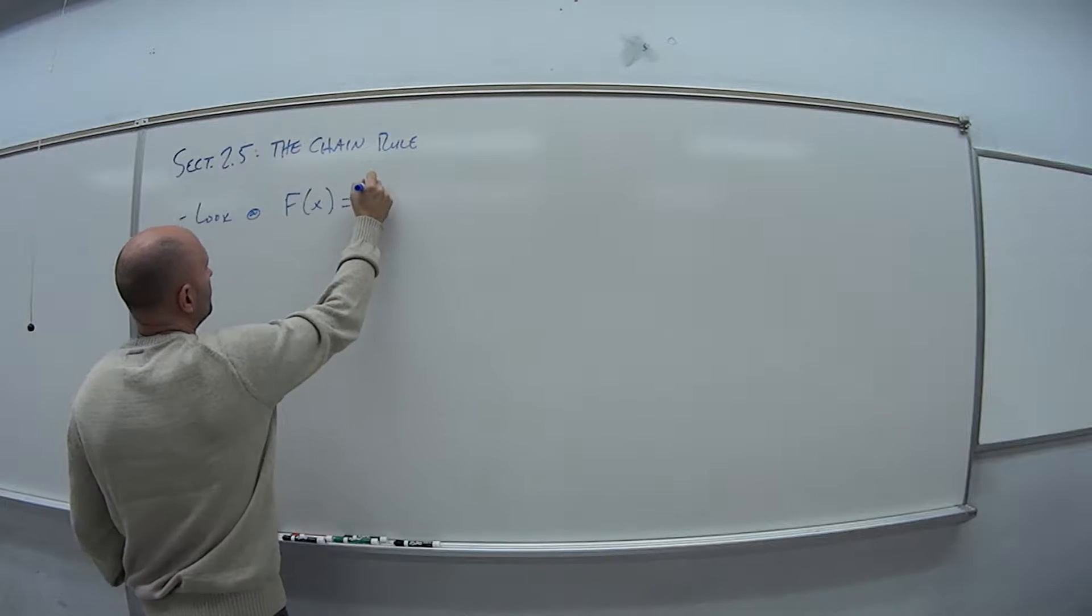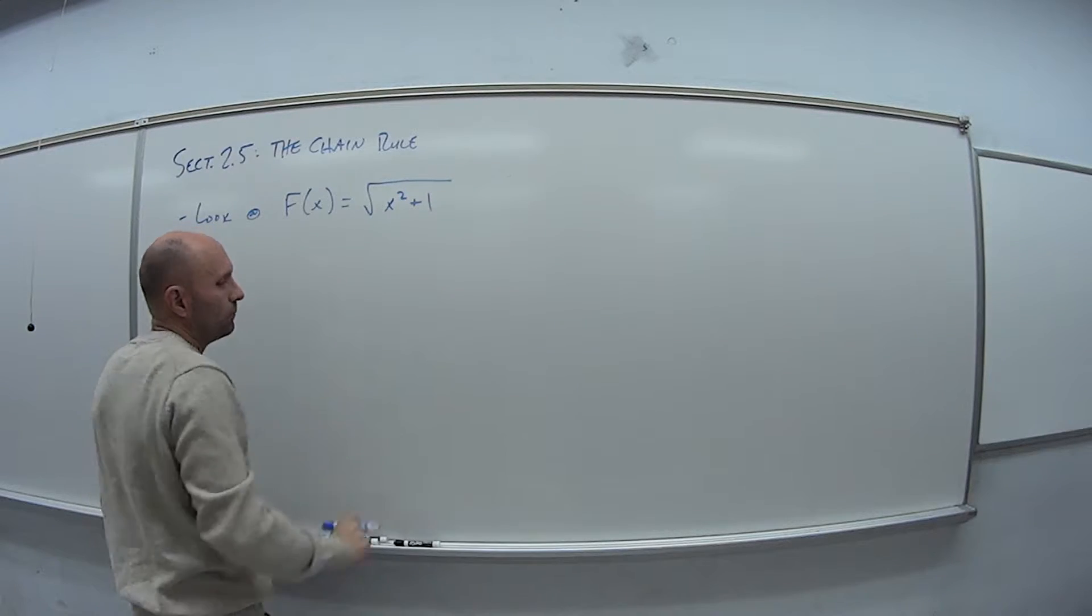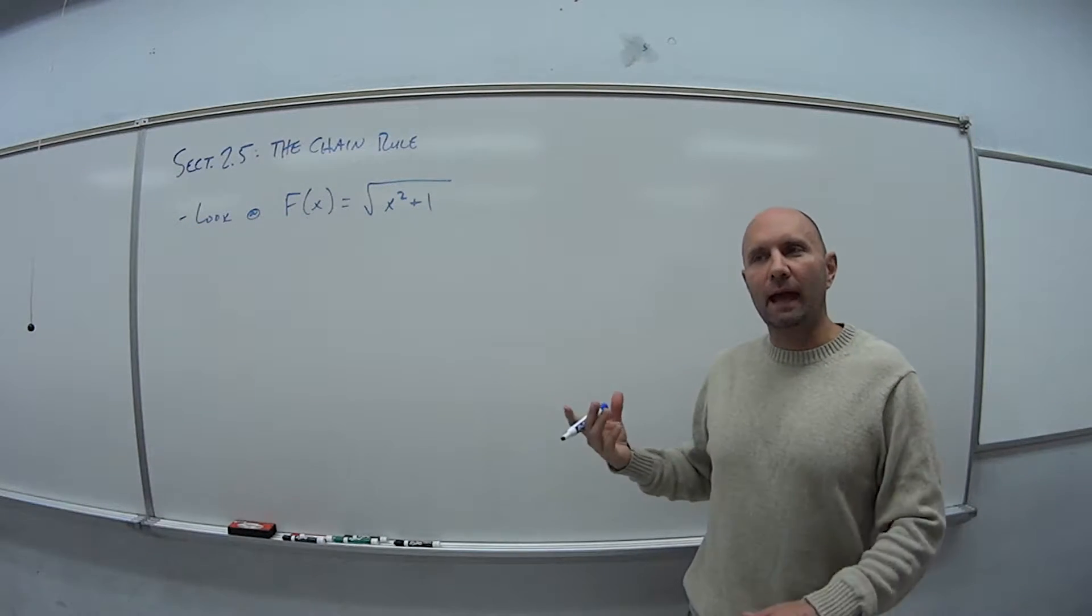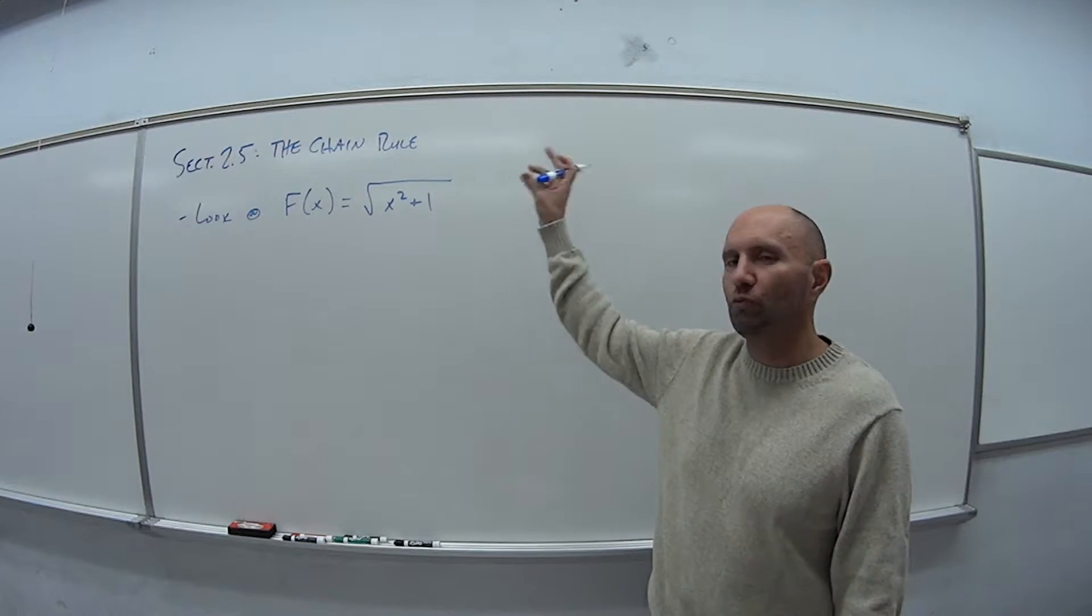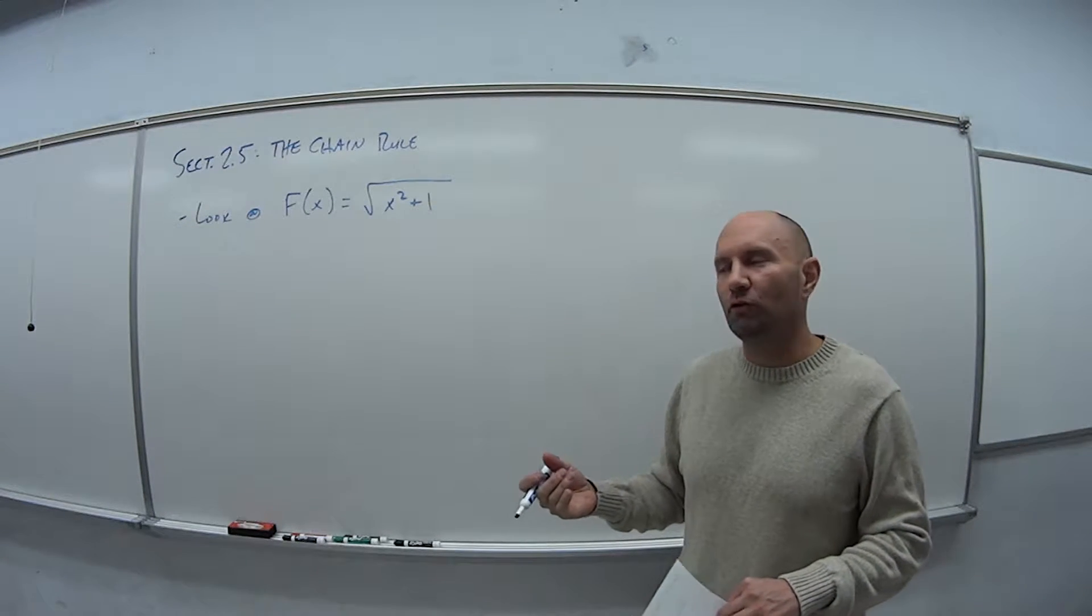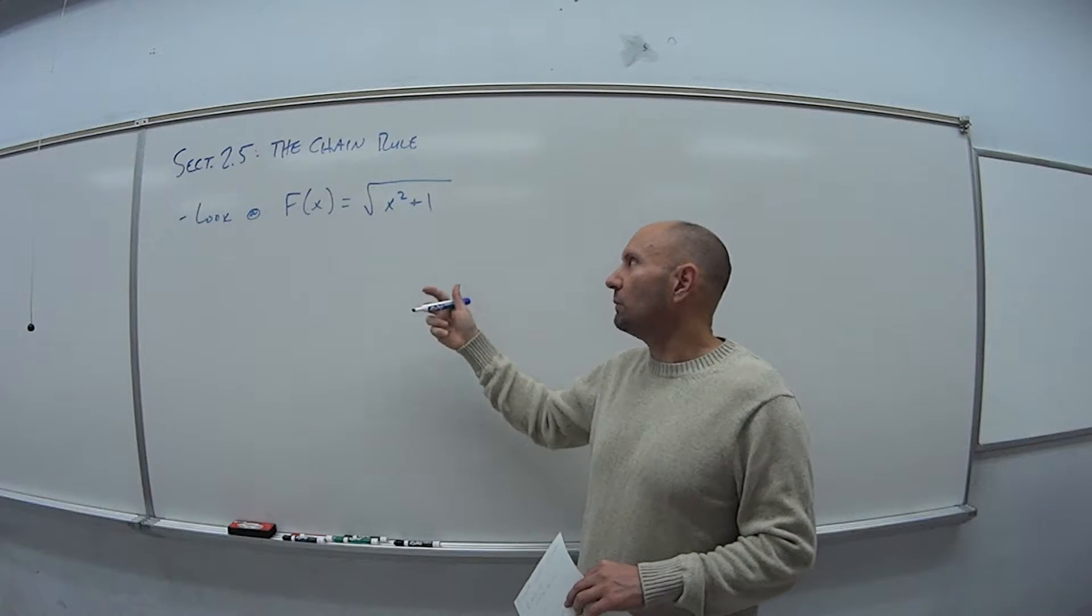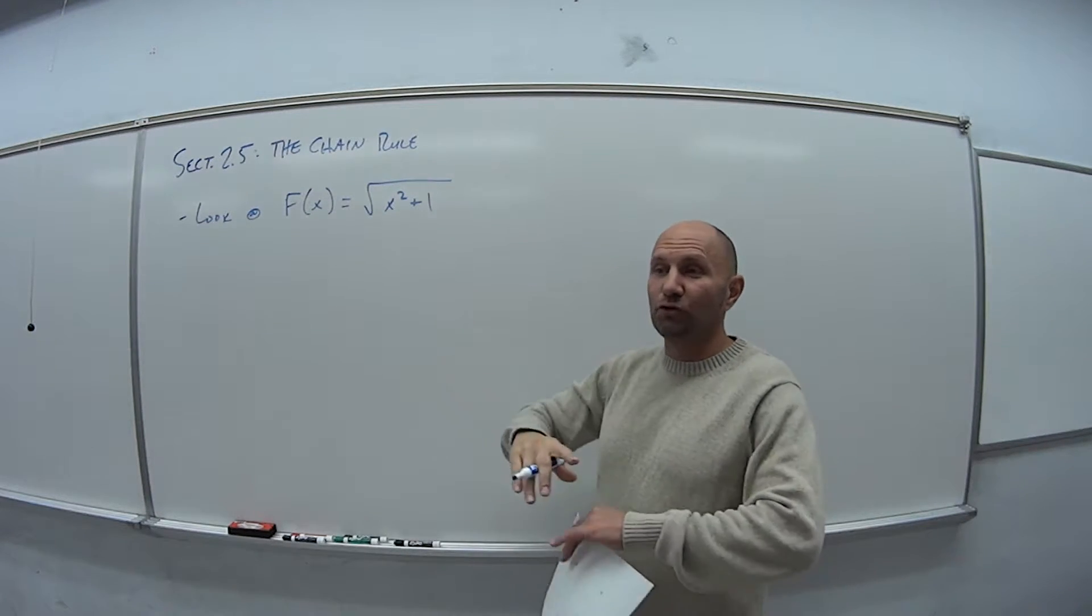So let's look at the following function: let's say we have some f of x equals the square root of x squared plus 1. Now if you think back when we were first looking at square root of x, I told you guys you can just raise the exponent, and that's fine because we only have x underneath. With this one we run into a little bit of a problem because we don't have just x underneath the radical sign.